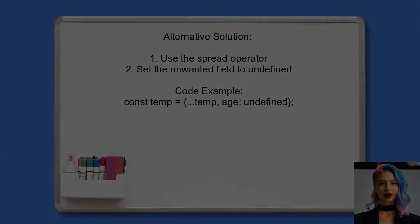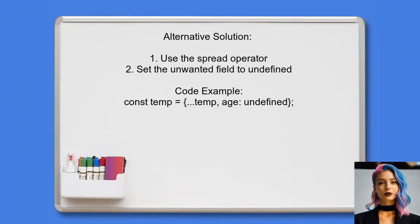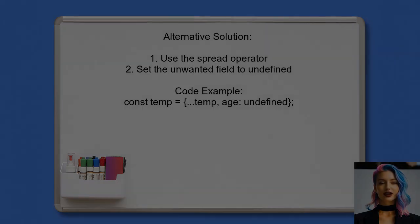An alternative approach involves removing the unwanted field by setting it to undefined. To remove the age field from the object, you can use the spread operator to create a new object with age set to undefined.